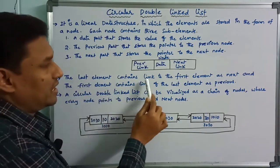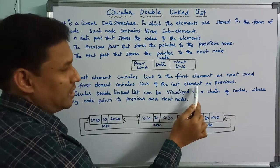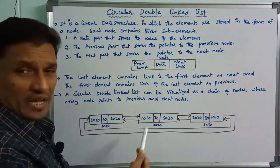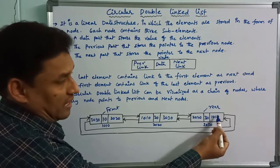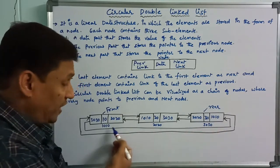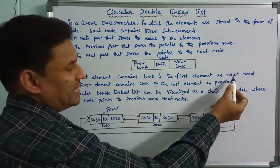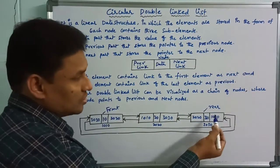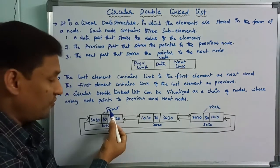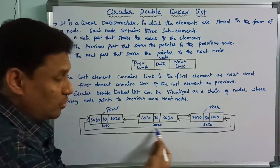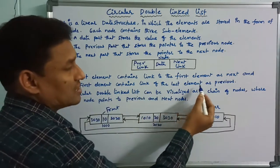The first element contains the link to the last element as the previous node, and the last element contains the link back to the first element, making it circular.